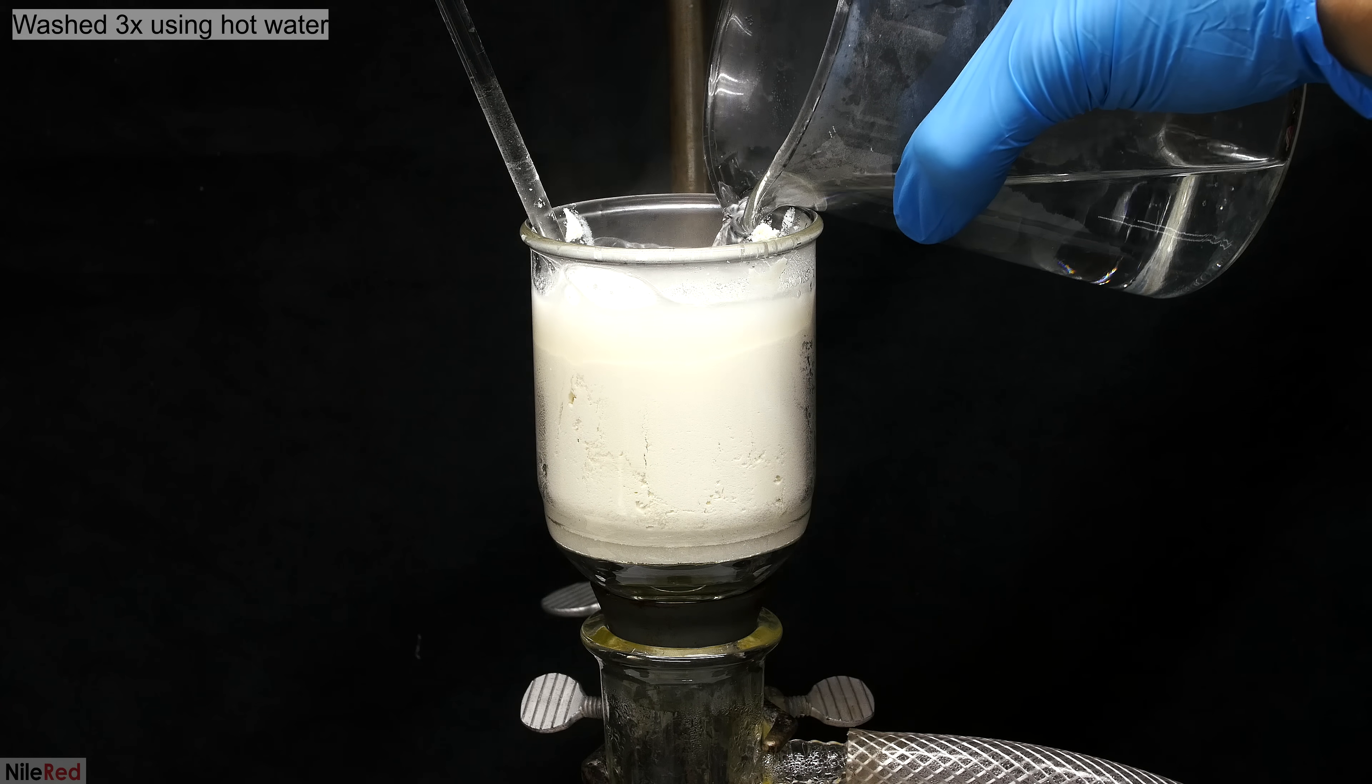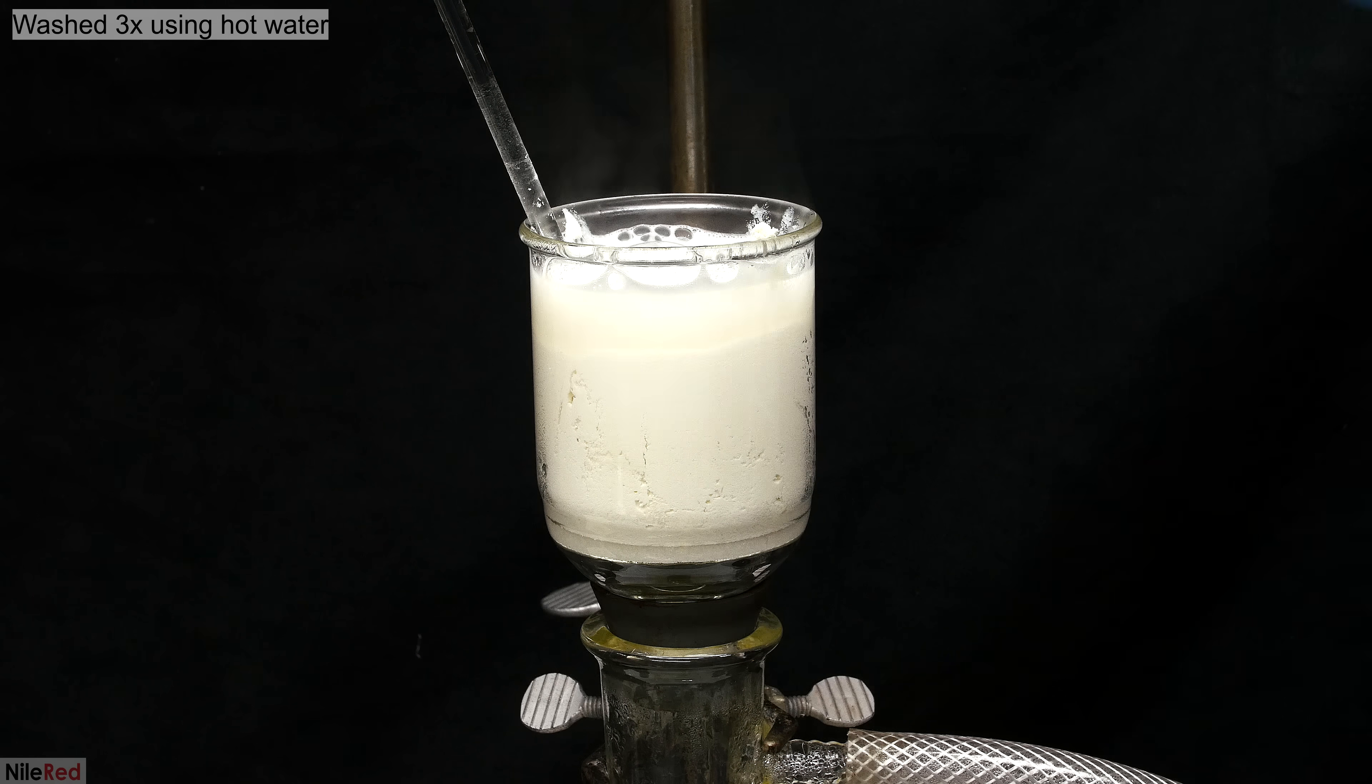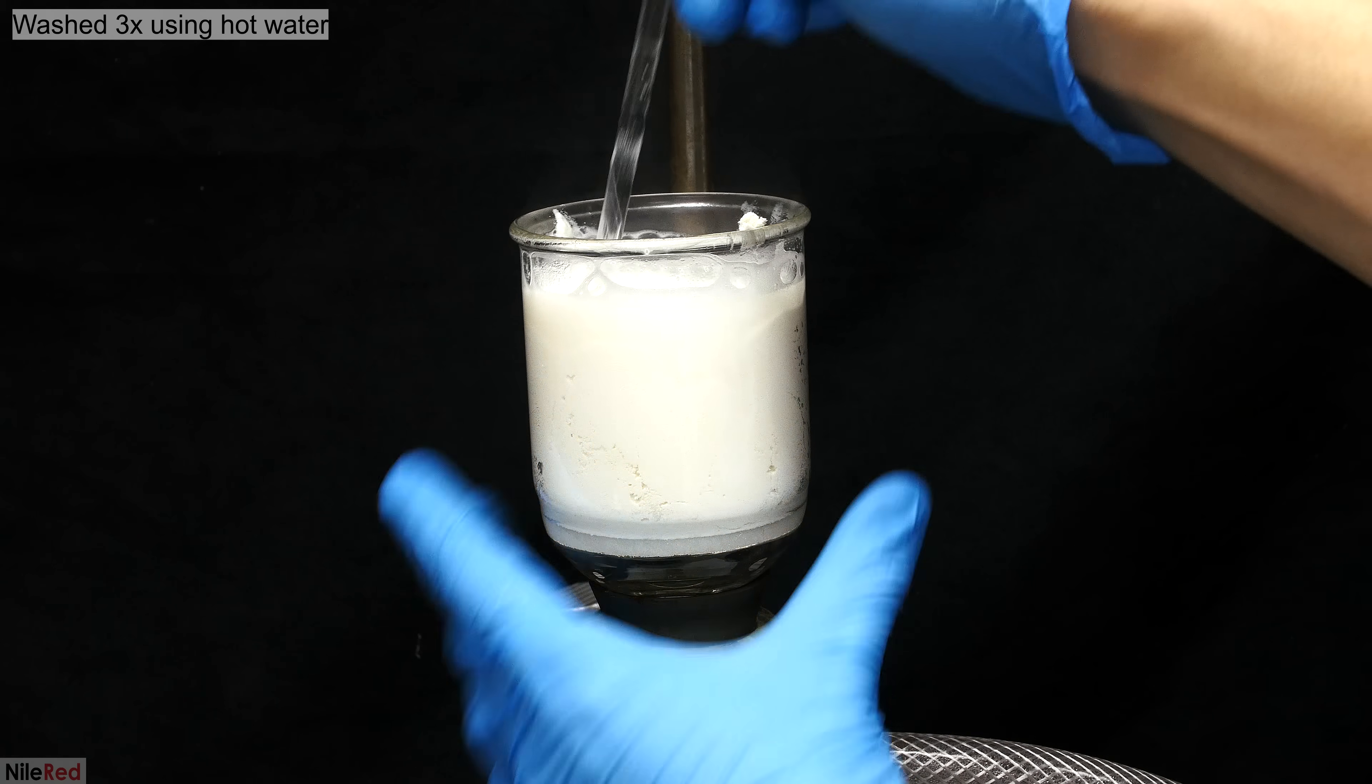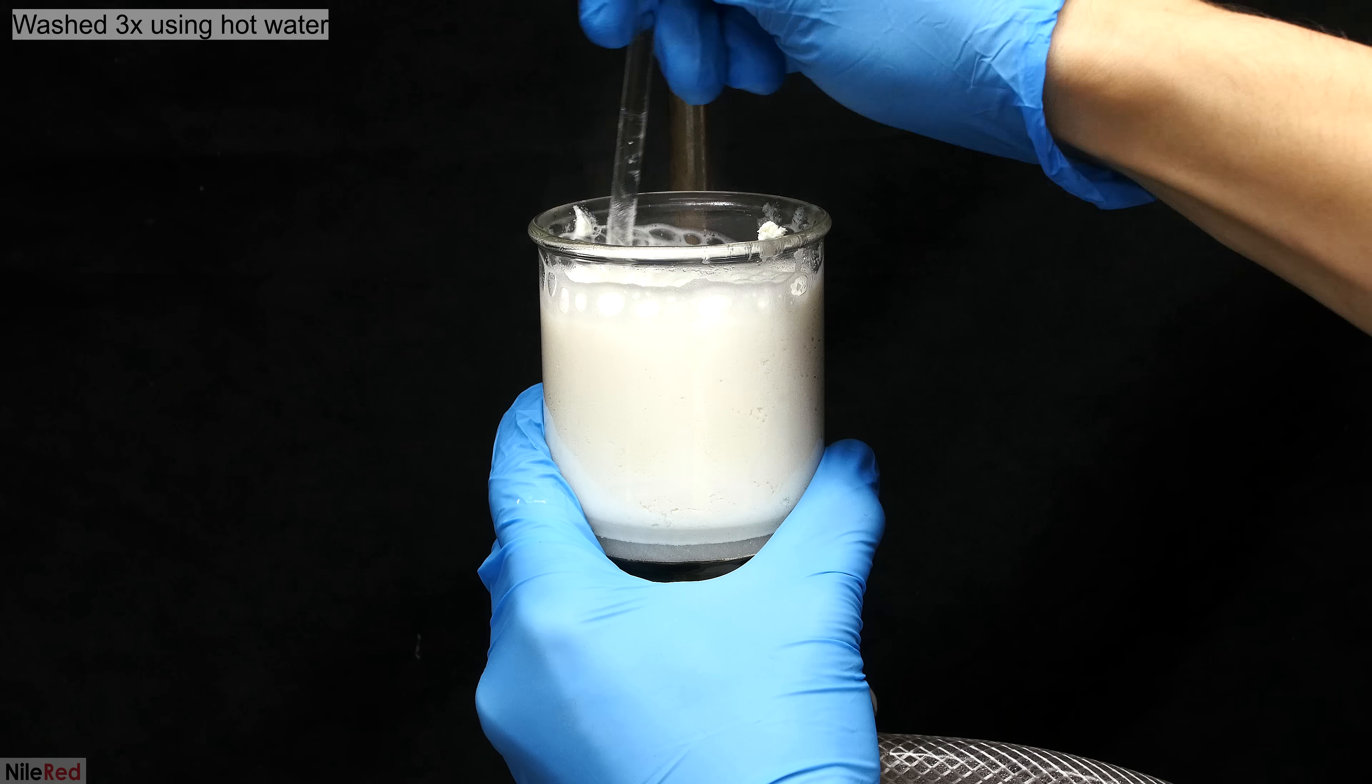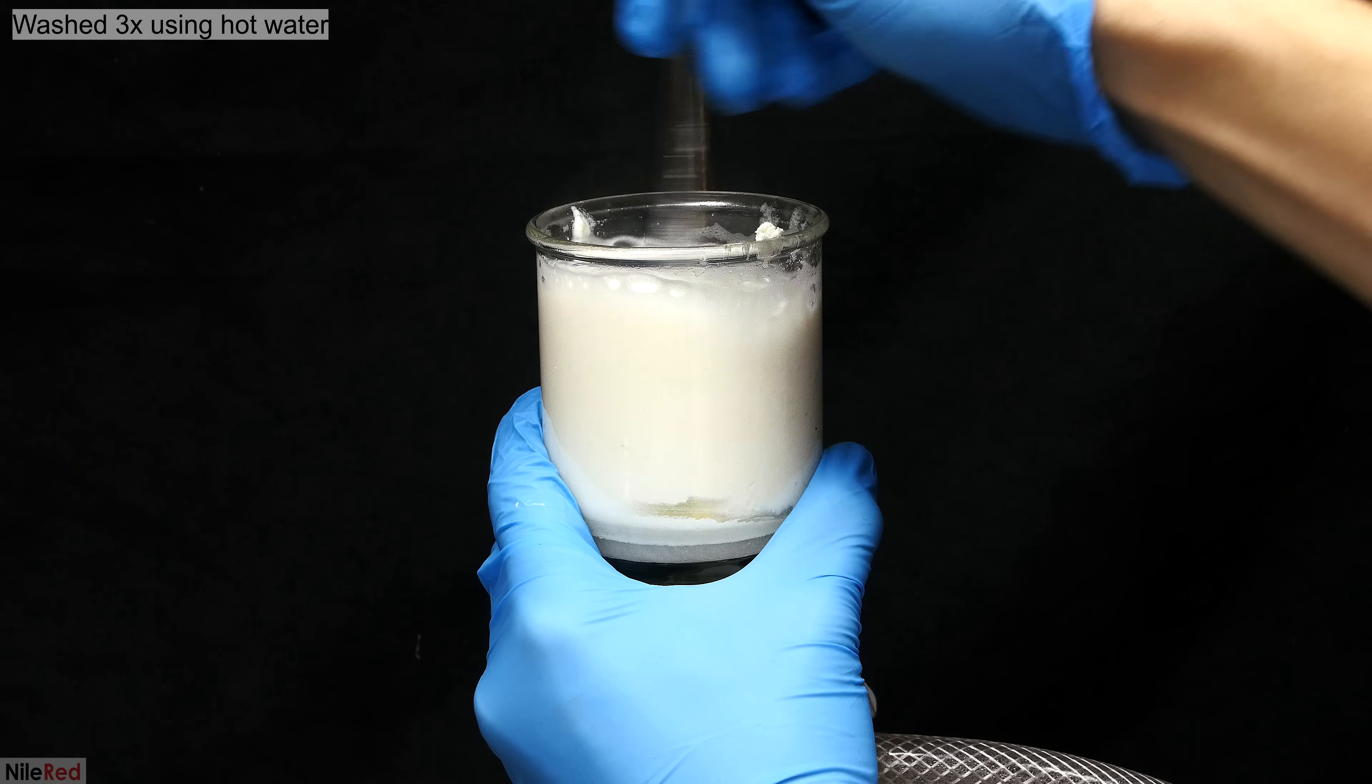I then added some hot distilled water and using the glass stir rod I thoroughly mixed things up. Once I felt like I had given the calcium citrate a good wash I turned on the vacuum and pulled away the water. This washing step is used to clean up the calcium citrate and I repeated it two more times for a total of three washings.